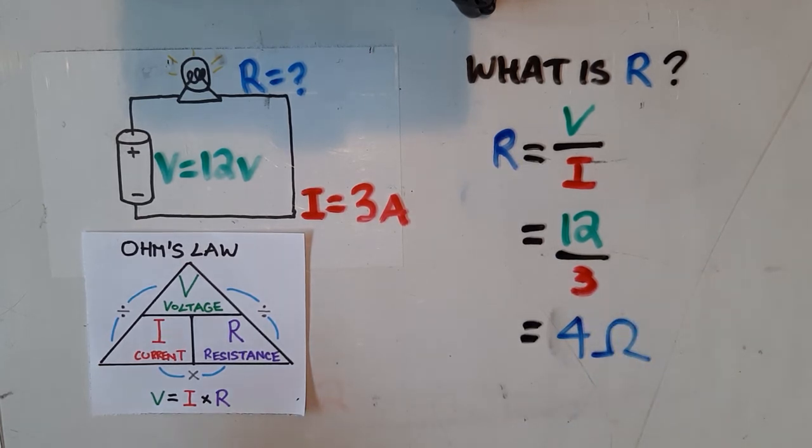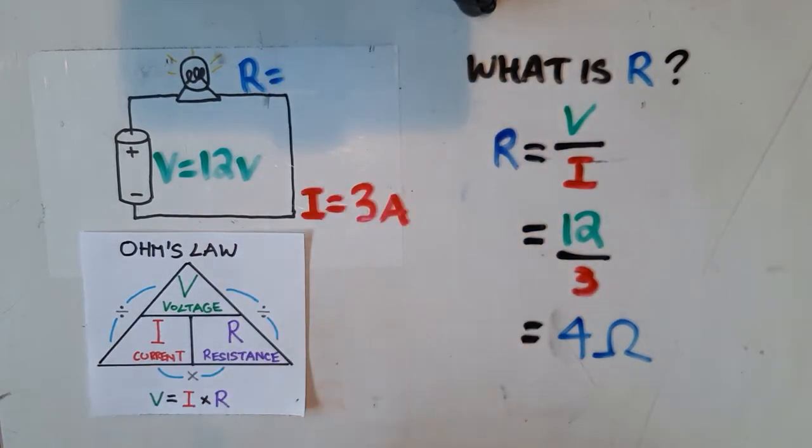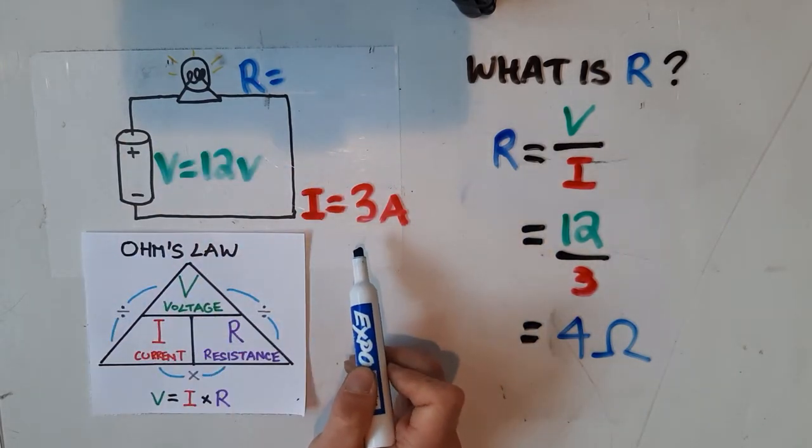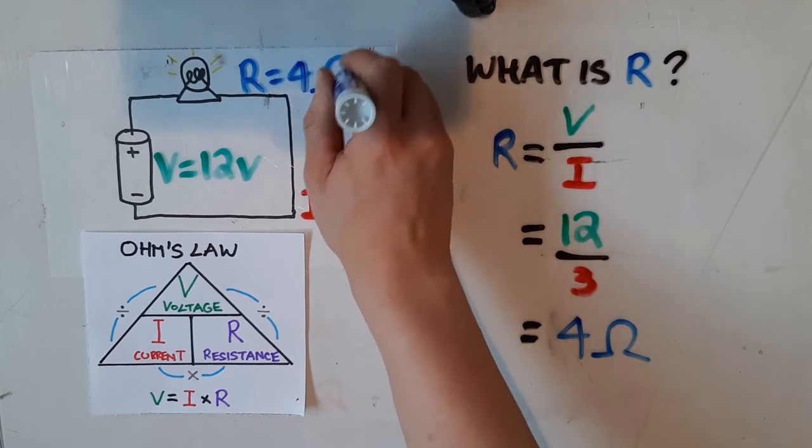So through Ohm's law, we were able to figure out that if there's 12 volts of pressure and there's 3 amps in the circuit, the resistance of the light bulb must be 4 ohms.